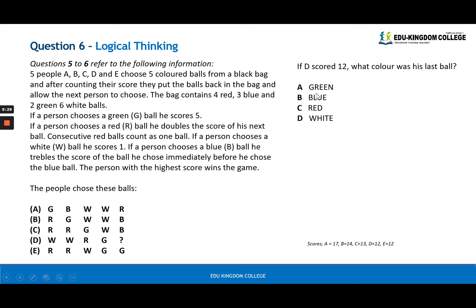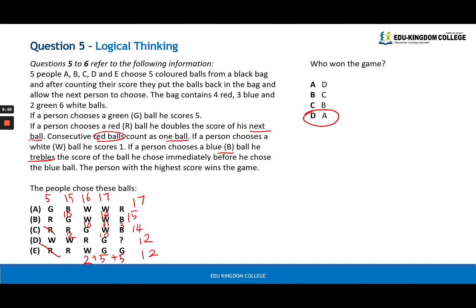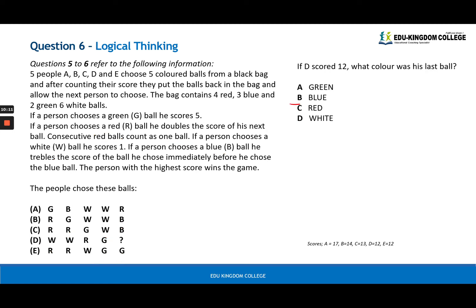And next one. If D scored 12, what was the color of their last ball? We can see that D already has a score of 12 without the last ball. If his final ball rendered a result of 12, that means that he or she did not increase the score. The last one provided a net change of zero. So which one would do that? The answer is red. Because the red only acts on the next ball that's happening, not the ball previous. So there's no next ball here. Therefore, the red will do nothing. It'll be zero. So the next color would be red.